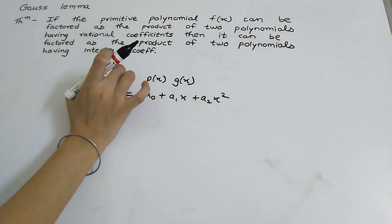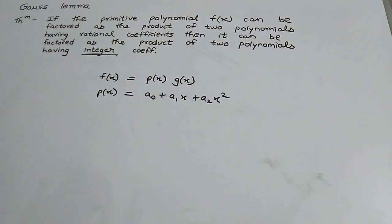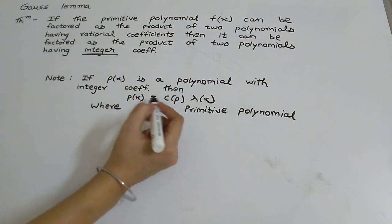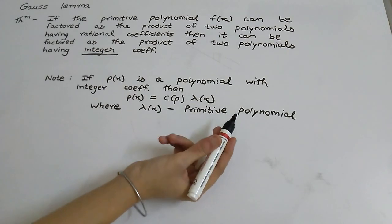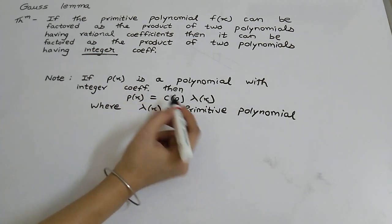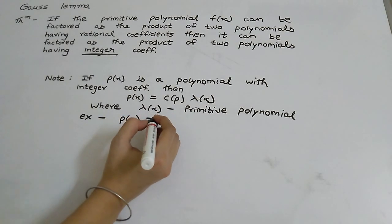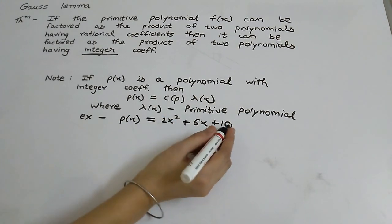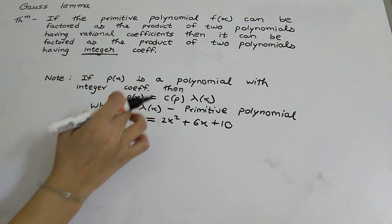We have to show that for f(x) we can get two polynomials in product form, but the polynomial coefficients should be integers. So let's look at the proof. If p is a polynomial with integer coefficients, then p can be written as p equals c times λ(x), where λ(x) is a polynomial and c means the content of this polynomial. For example, p(x) = 2x² + 6x + 10, where 2, 6, and 10 are integers.